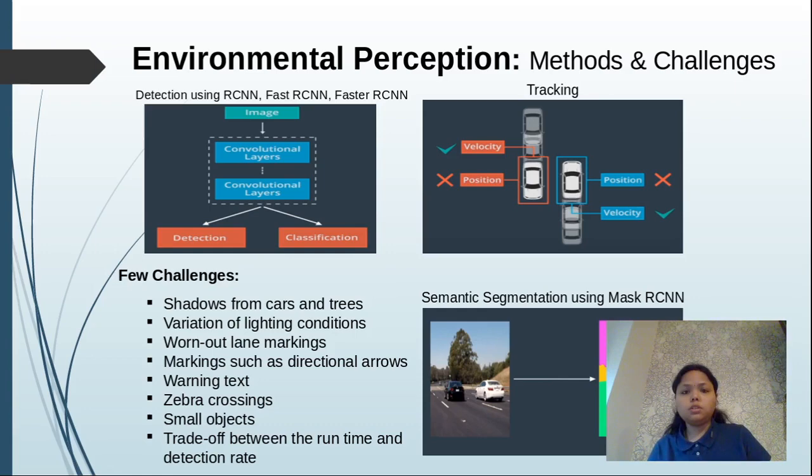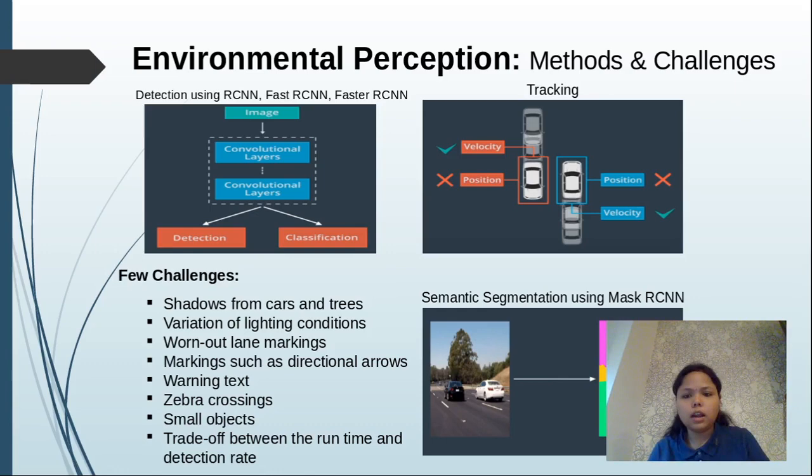A very useful use case of working with lidar is to classify whether a point is a ground point or a non-ground point. For a final year project on environmental perception, you can take 2D images from camera and apply various detection and classification algorithms. On the other hand, you can also buy your own lidar, get some point cloud, and try to do a mapping between different regions from the point cloud to the camera.